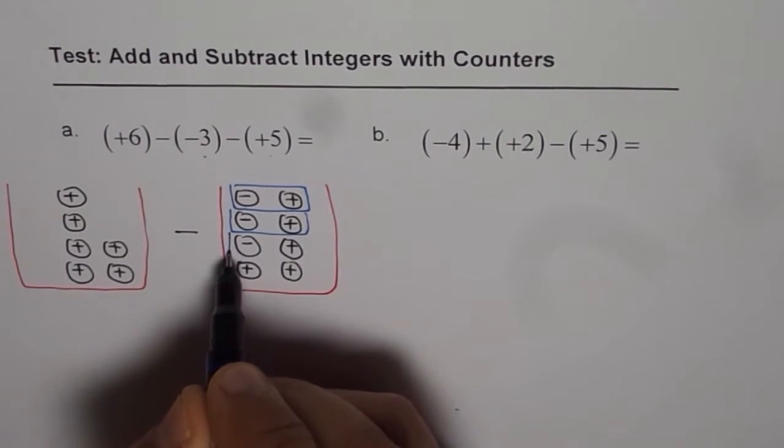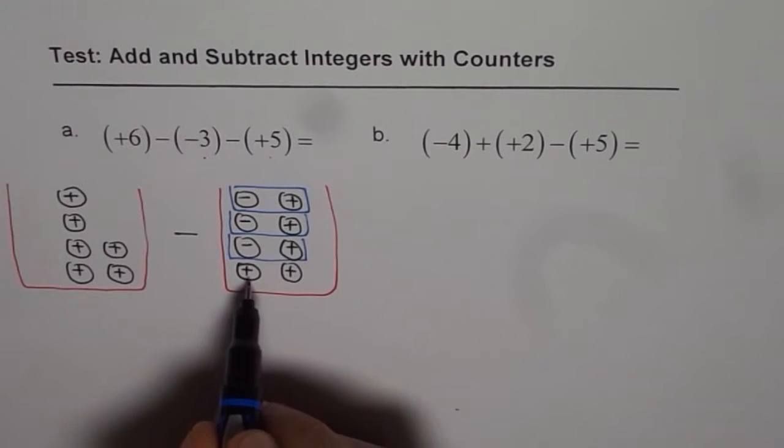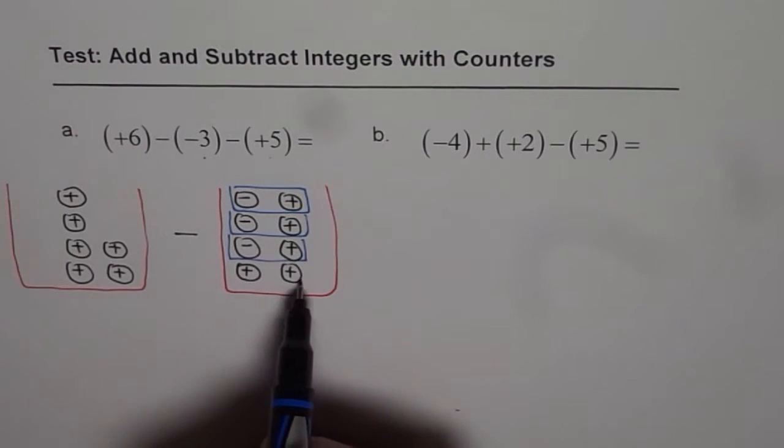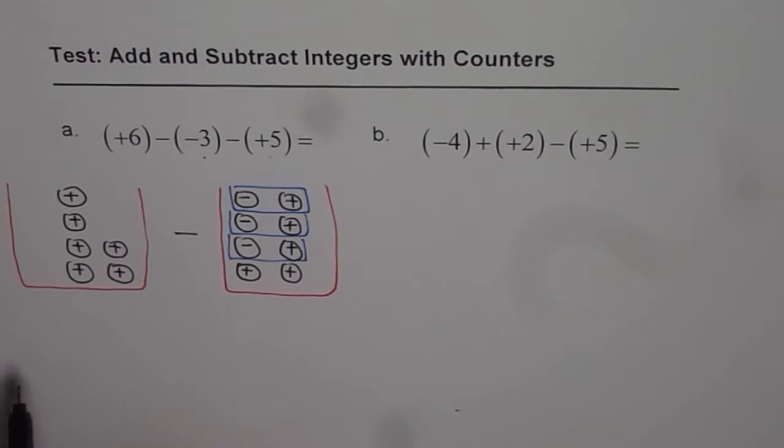So that becomes 0. This also becomes 0. This also becomes 0. So we are actually left with 2 positive here. Now we will take away these 2 positives from this container and see what remains.